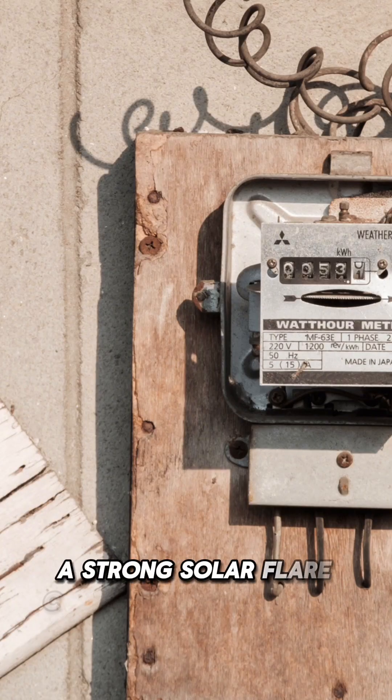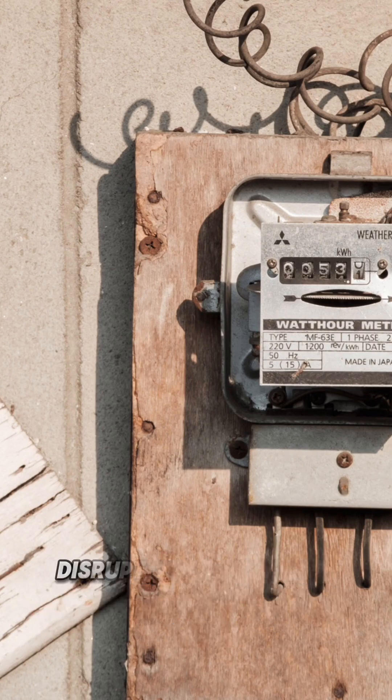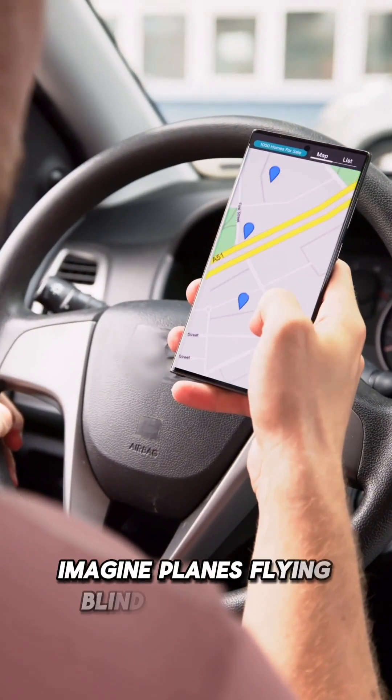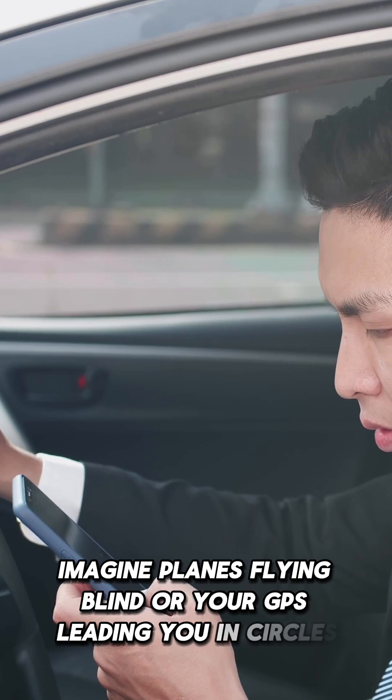A strong solar flare could knock out power grids, disrupt satellites, and mess with navigation systems. Imagine planes flying blind or your GPS leading you in circles.